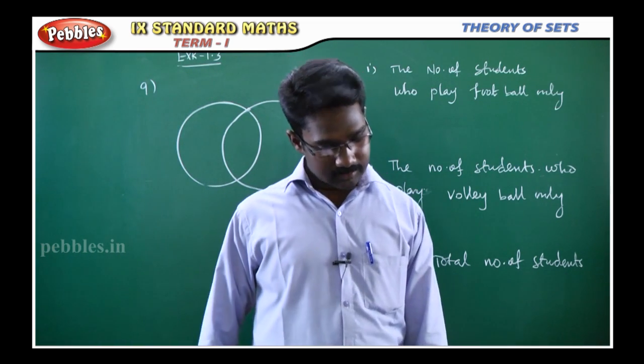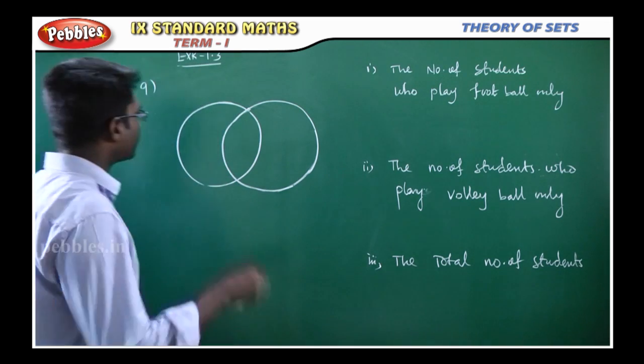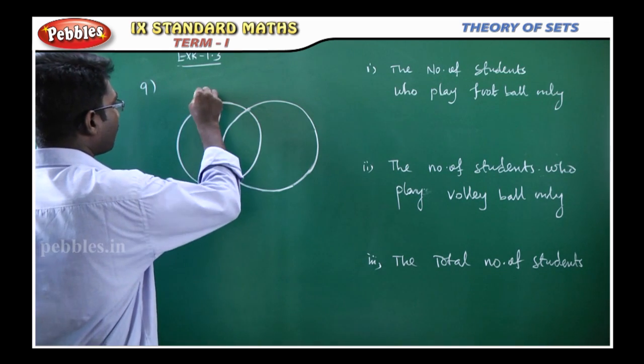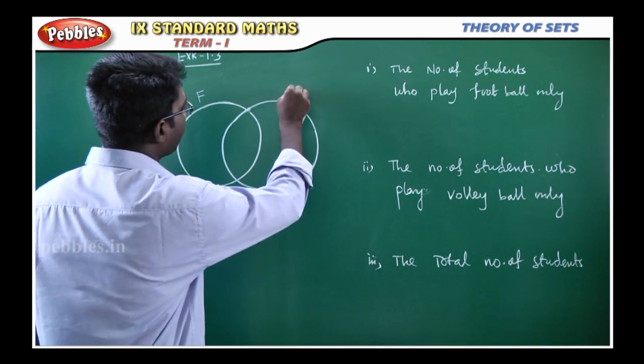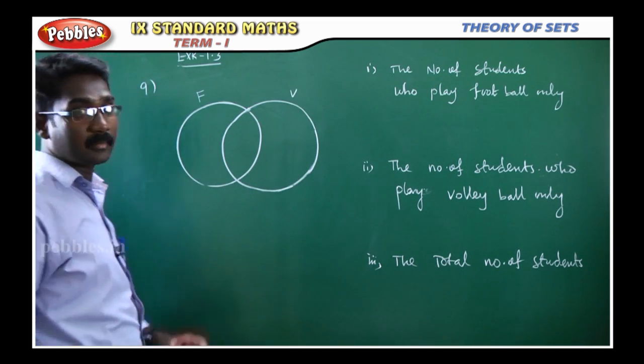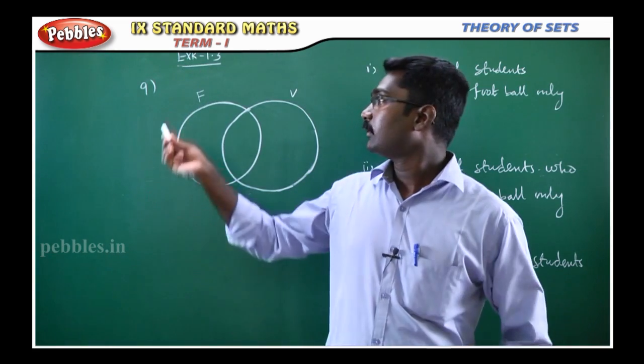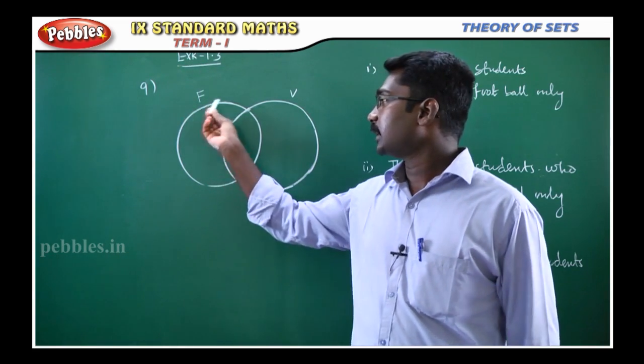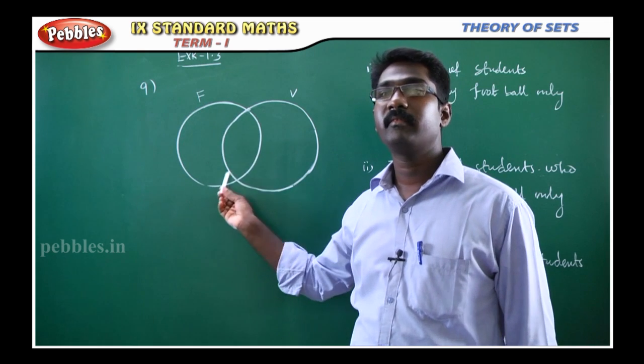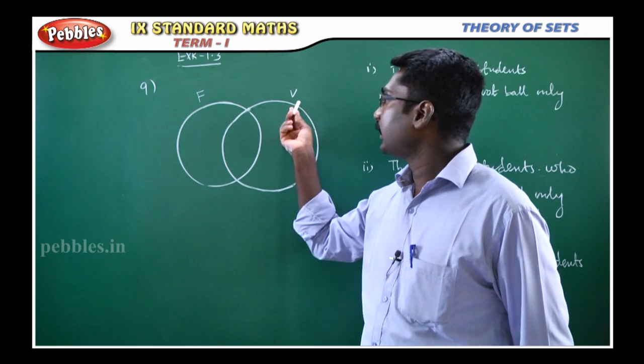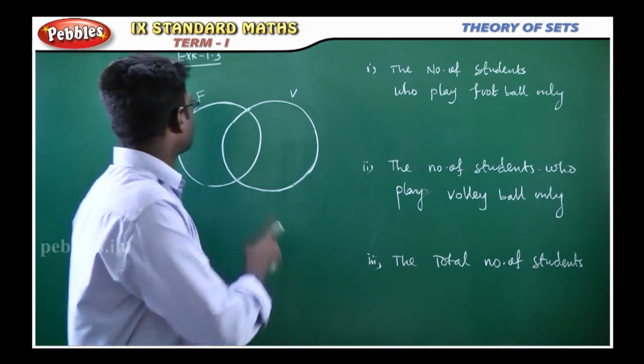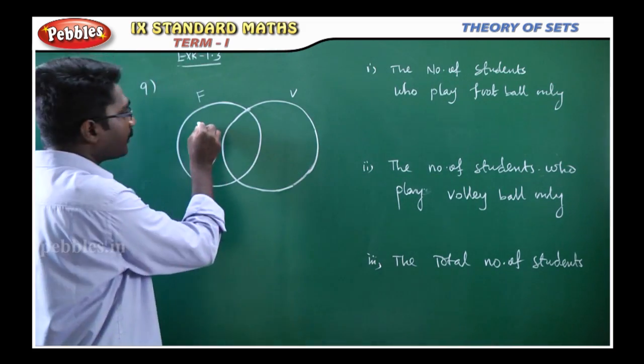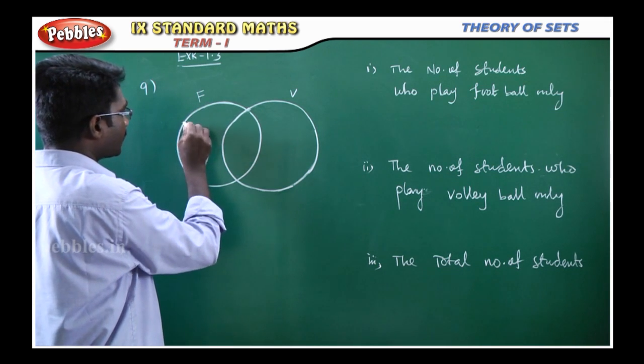300 students play football. Suppose in the first circle, football. Second circle, volleyball. Let F be the set of all students who play football. Then, let V be the set of all students who play volleyball. So, what is the number of all students? 300 students.